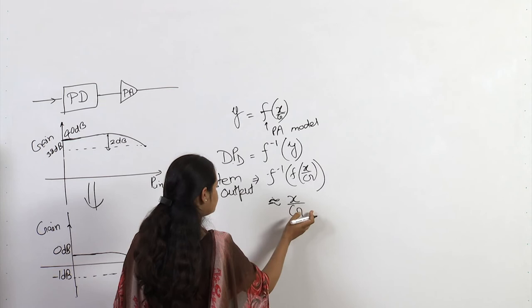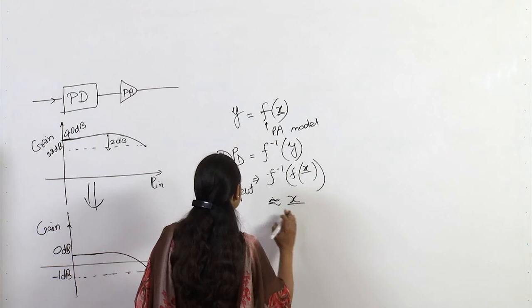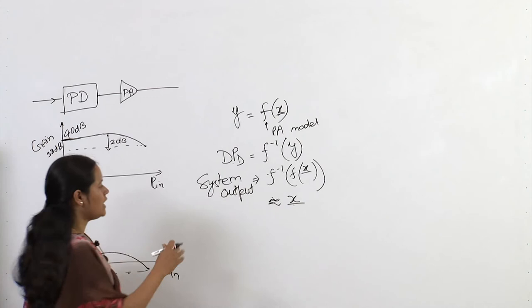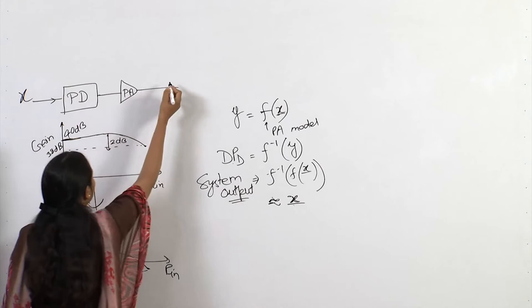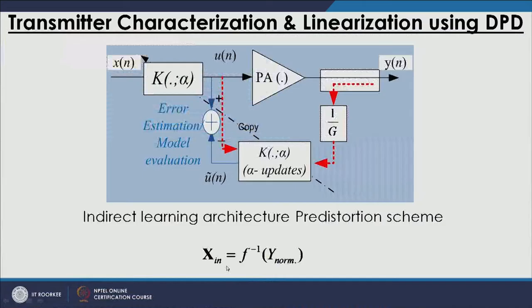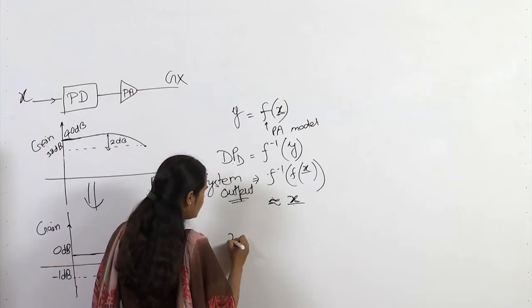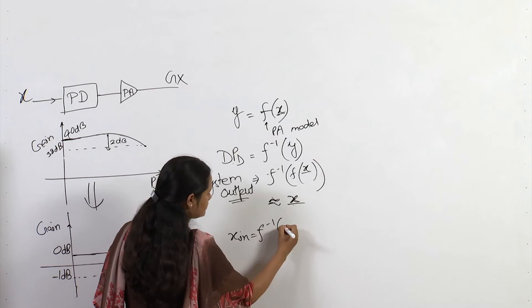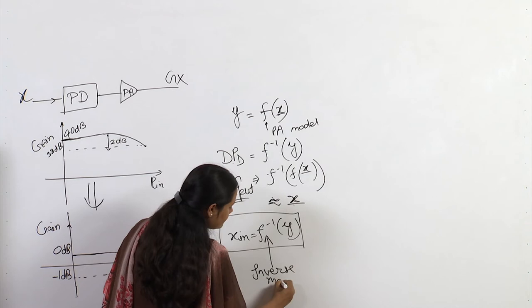Once we remove G and assume both signals are at the same power level, the system output is exactly x, which is what we wanted — the output to be G·x without any distortion. For inverse modeling, we model the relation in the opposite direction. Instead of writing F-inverse, we define a new function gamma(y), which will be our DPD model. By capturing data, we set the PA output on one side and the input on the other, and find this gamma model.